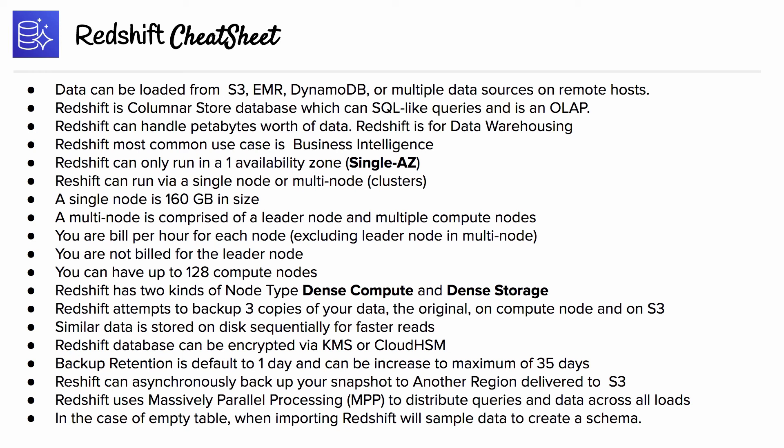The maximum by default was 32, but they're not going to ask you what the default is on the exam. Redshift has two kinds of node types: dense compute and dense storage, and it should be pretty obvious when you should use one or the other. Redshift attempts to back up your data three times — the original on the compute node and on S3. Similar data is stored on disk sequentially for faster reads.